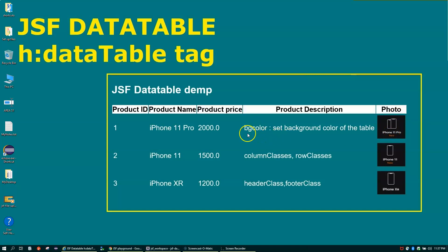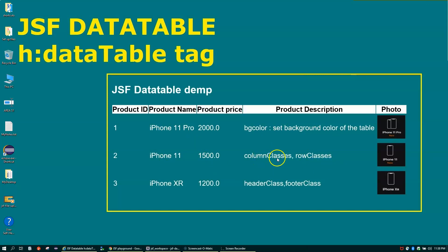We have a few additional attributes like bgcolor to set the background color, column classes to change the background or text color of columns, and row classes to alternate or highlight particular rows. We also have header class — for example, here the background is white because I used header class — and similarly we have footer class.